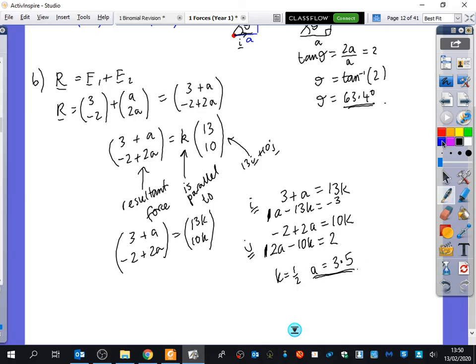Now, I'm just going to connect this back. You don't have to do this extra stage. If I've said that A is 3.5, I'm going to connect it all the way back to say, well, what is R equal to? So R would be equal to 3 plus 3.5, which is 6.5, and minus 2 plus 2 times 3.5, which is 5.